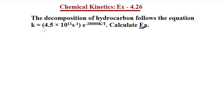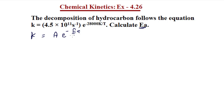If we look at this expression, we can find that it is quite similar to the Arrhenius equation. The Arrhenius equation is: k is equal to A — the pre-exponential factor — multiplied by e to the power of negative Ea divided by RT.